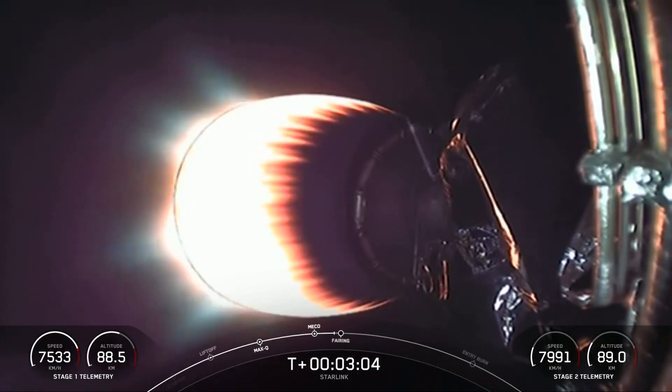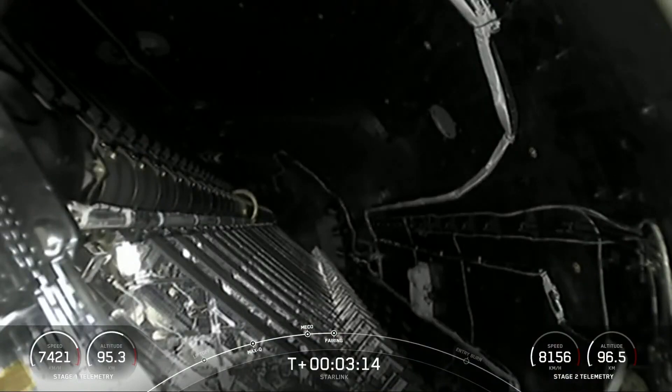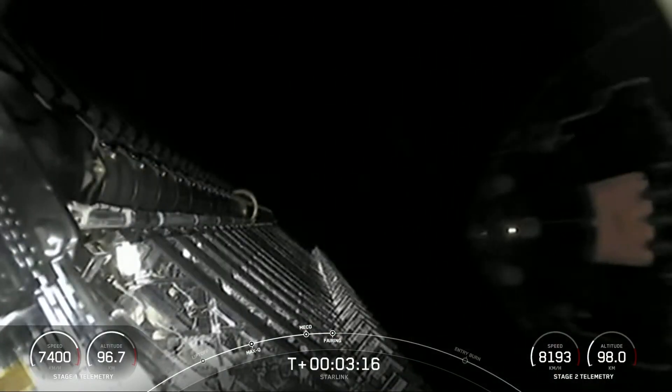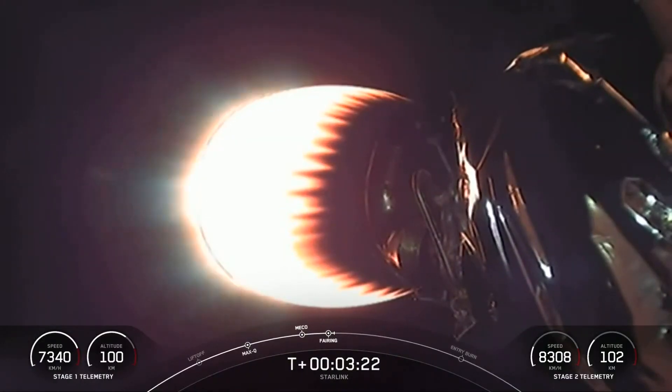Coming up in a few seconds here is fairing deploy. Fairing separation confirmed. And off goes the fairing halves, exposing the batch of Starlink satellites on top of the second stage.